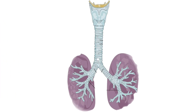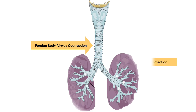The object can enter the trachea, leading to foreign body airway obstruction, or the object can pass on to the bronchus, resulting in infection, lung abscess, or atelectasis.